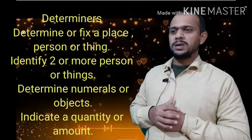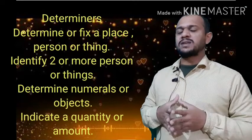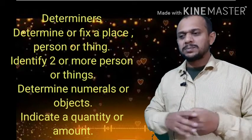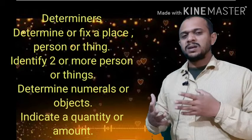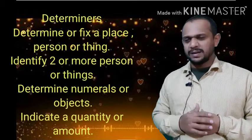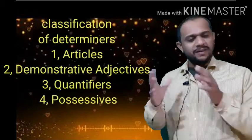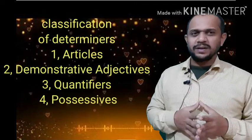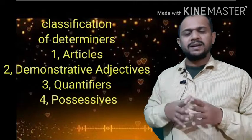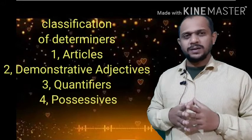Now if we talk about the classification of determiners, we have four to five classifications. Number one: articles — definite or indefinite. The definite article is 'the,' used for something specific or unique.